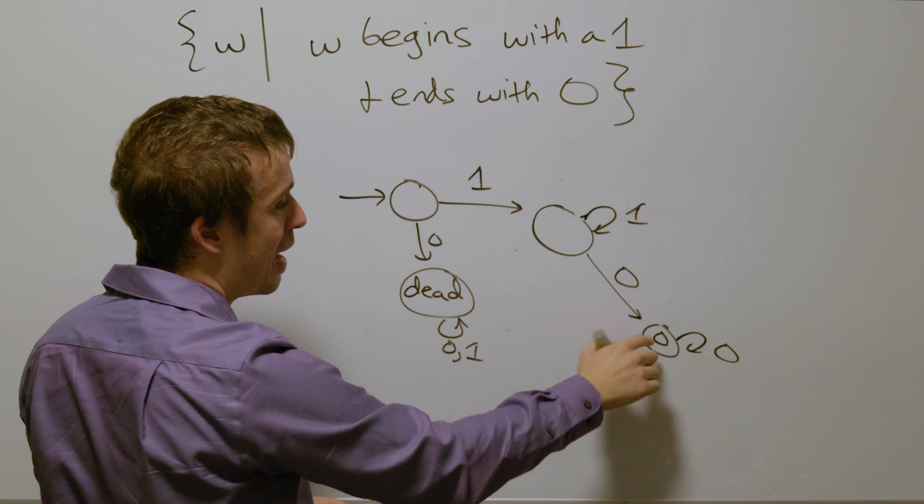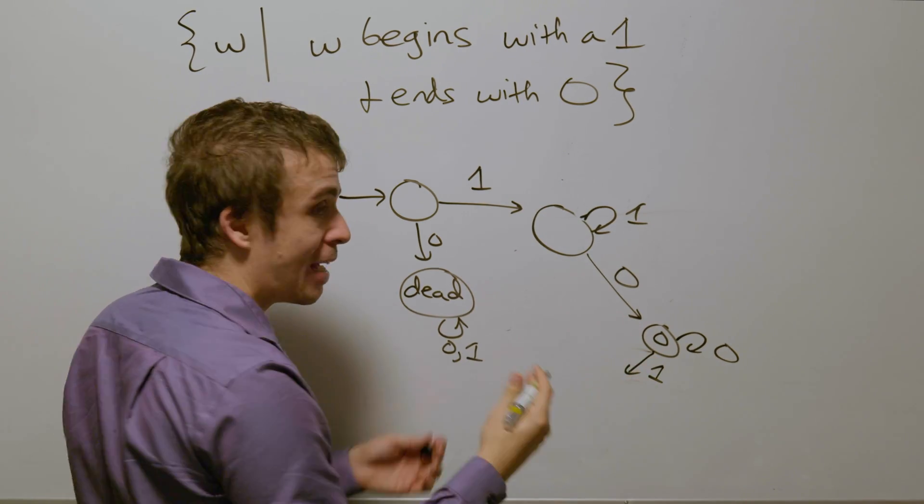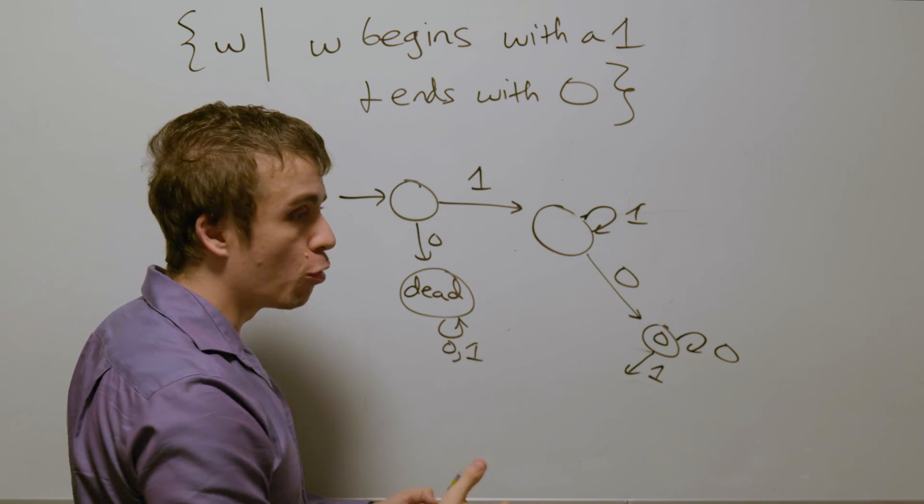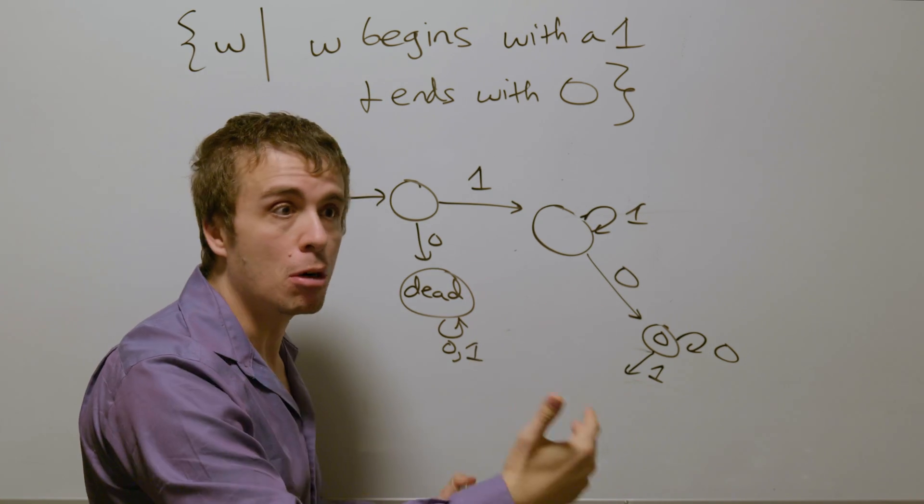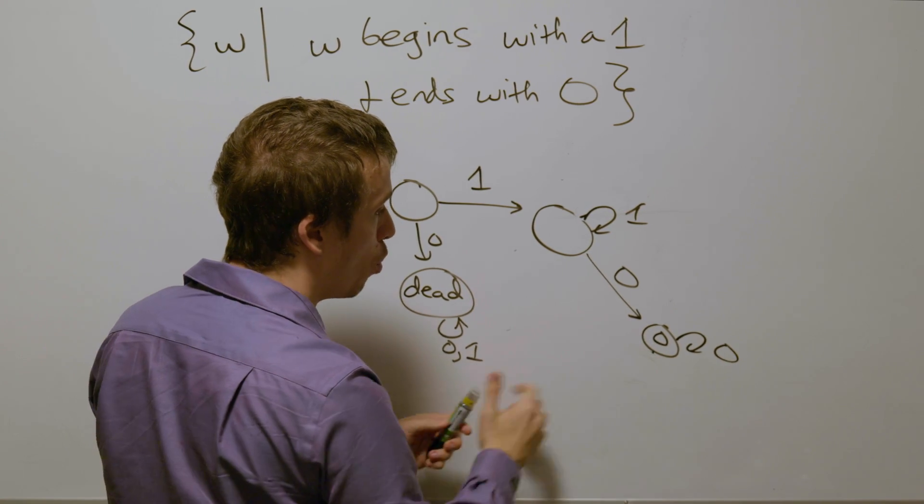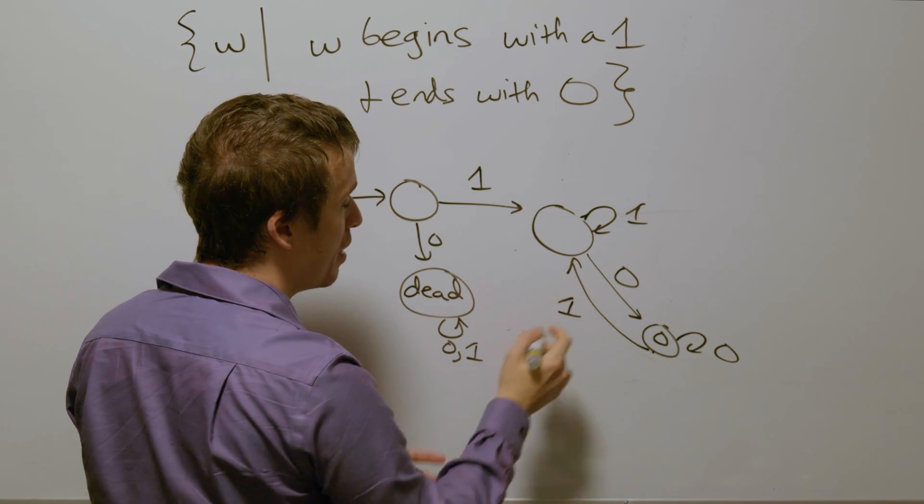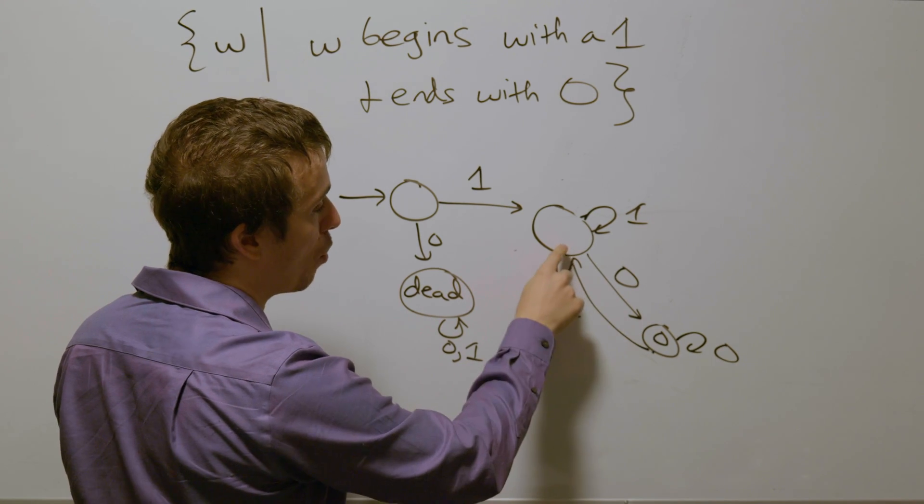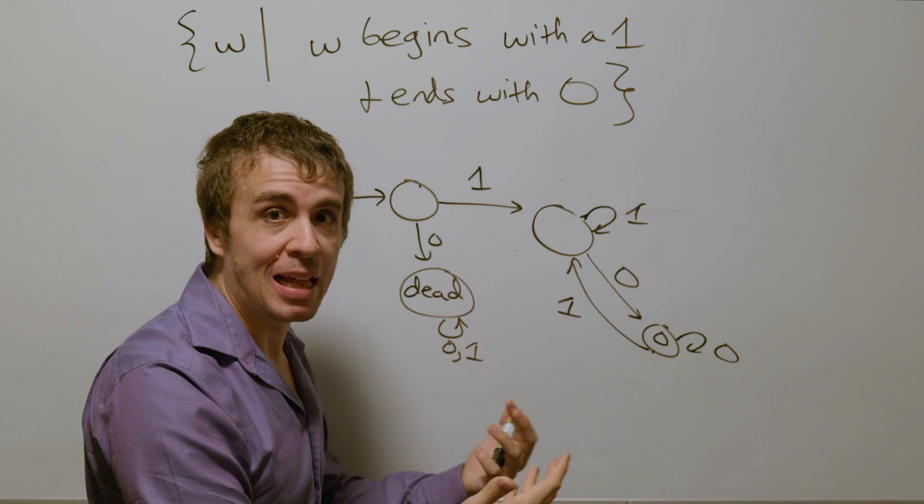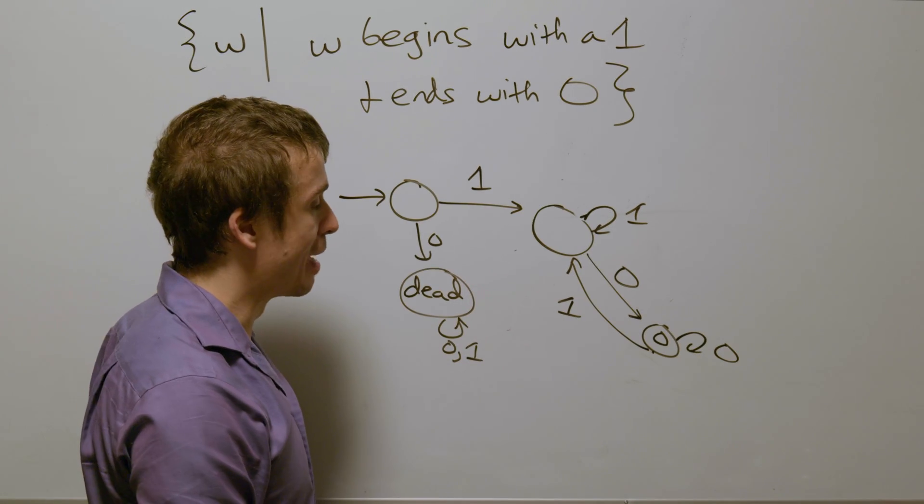But if we see a one at this point, that breaks the fact that the last thing we saw was a zero. And so we would need to see yet another zero before we can actually accept the whole thing. So we need this one to eventually come back to this state. Because at that point, we can see one zero, one more zero, and then if that's the last thing, we will accept at that point.